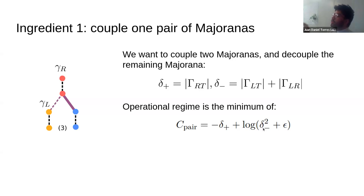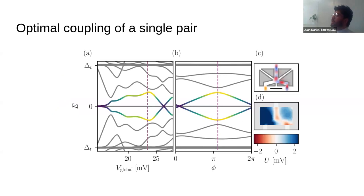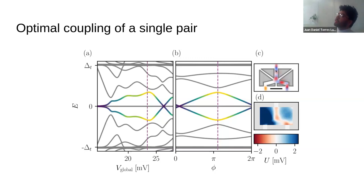We minimize this cost function and find the optimal point at which the right and top Majoranas are coupled. Panel D shows how the potential in the trijunction region looks at this optimal point — one arm is decoupled and the other two arms are connected by a channel. Panel C shows the wave functions perfectly connecting these two Majoranas. The quantity through which we measure this is the first excited state energy, which tells us the coupling. The optimal point found by minimizing the loss function coincides with the maximum coupling — this is as well as we can couple this pair in this device.